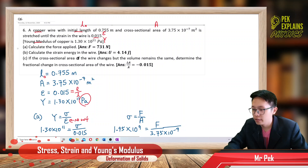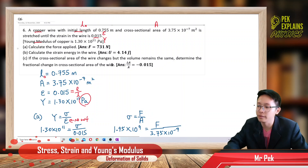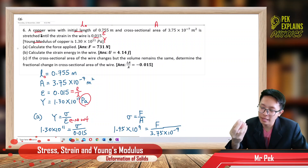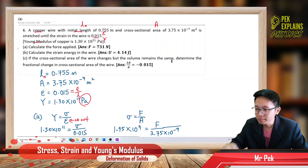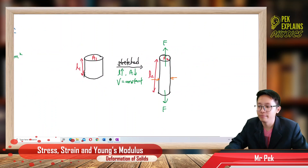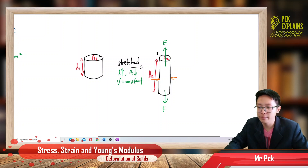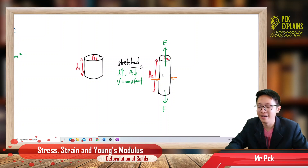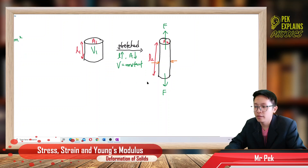Now, if the cross-sectional area of the wire changes but the volume remains constant, determine the fractional change in the cross-sectional area. When you stretch the wire, the amount of material remains the same — that's why volume is constant. Looking at the diagram: before stretching the area is wider, after stretching the wire becomes longer so the area will shrink. Volume V1 must equal V2, so when length increases, area decreases.